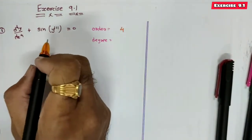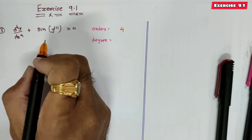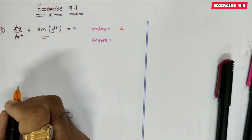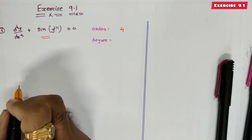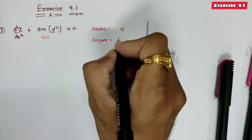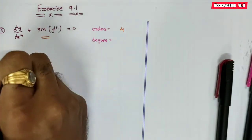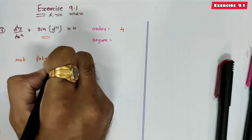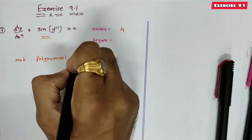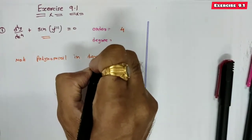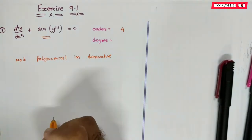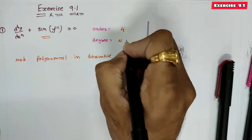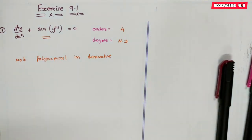To define degree, the differential equation must be a polynomial equation in derivatives. But here we have sin(dy/dx) and sin(d³y/dx³), so the given differential equation is not a polynomial in derivatives. That is why the degree of this differential equation is not defined.